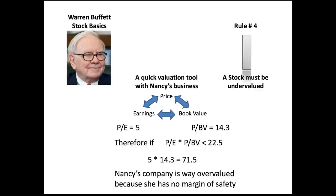I applied this quickly to Nancy's business. Her P/E was 5, and her price-to-book was 14.3. Taking 5 times 14.3 equals 71.5. If we ran Nancy's business through Buffett's valuation tool, she would miss the mark by a lot — she's way overvalued. We want the number below 22.5, and she came in at 71.5.